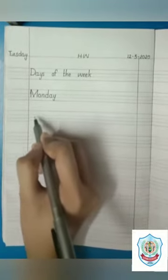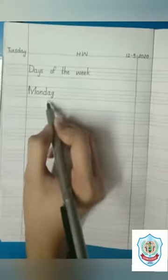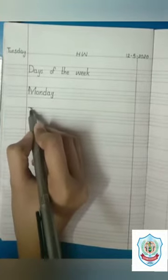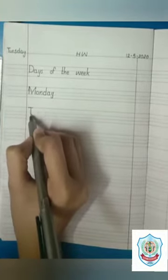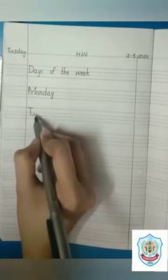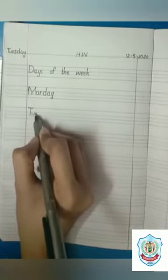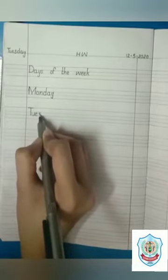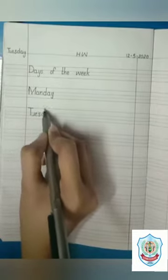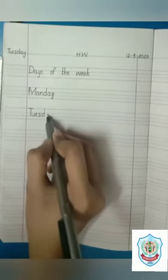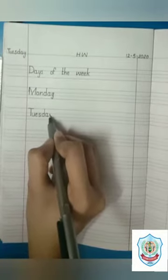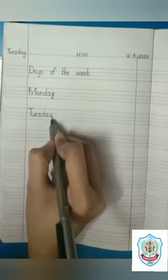Tuesday — write the spelling of Tuesday. T has a sound — T. U, and E makes a sound — U. S has a sound — S. D has a sound — D. A, and Y makes a sound — A. Tuesday.